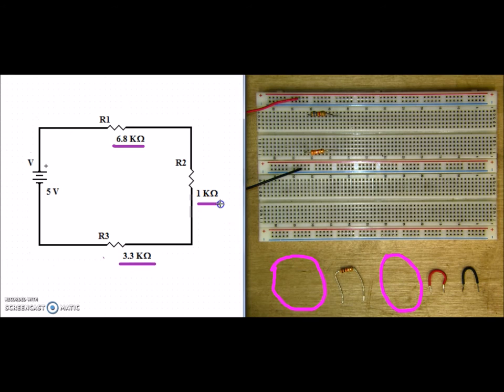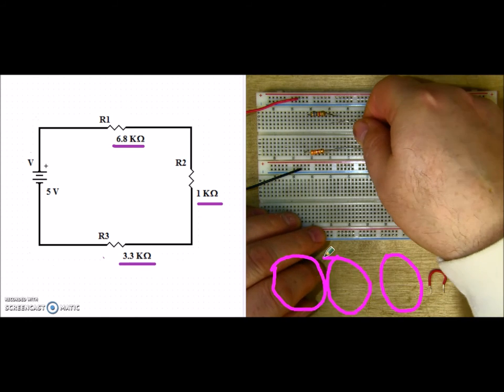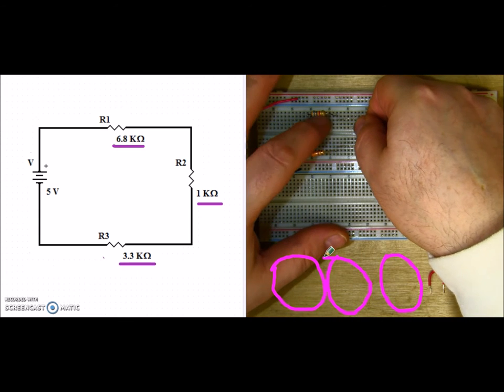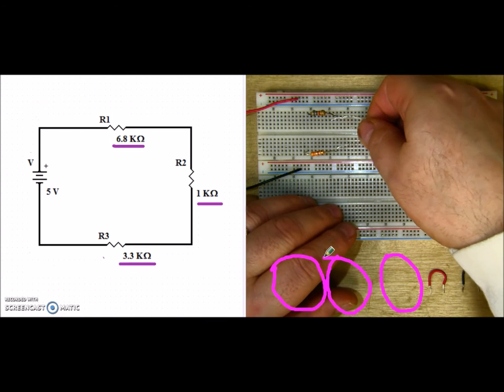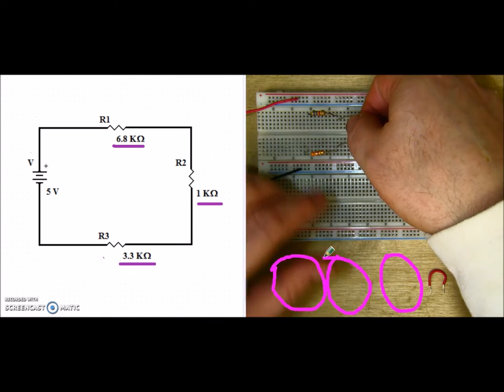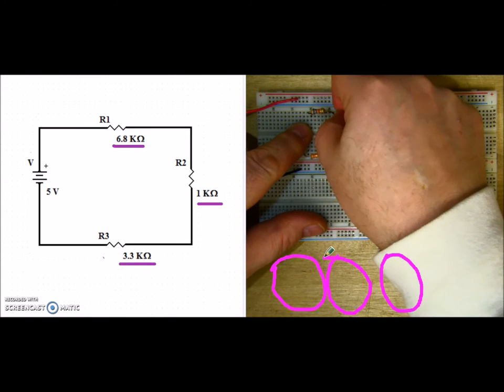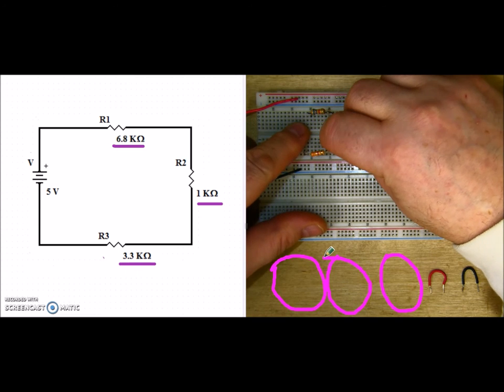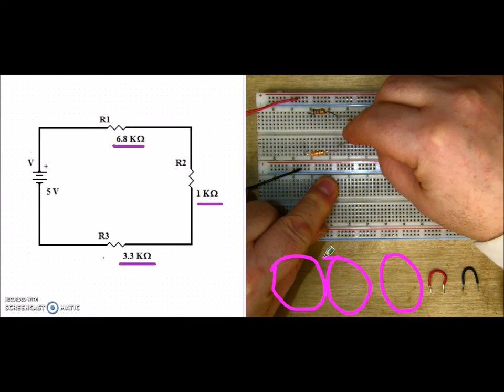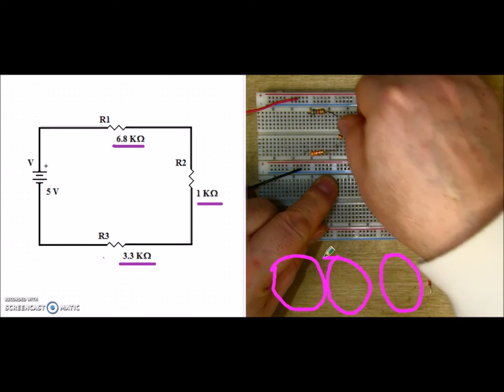And then finally, I'm going to do R2, which is my 1k right here. Now, what's important is that each one of my terminals is in the same column as R1 and R3. So the top of R2 is in the same column, has one terminal of R1. And the second terminal of R2 is connected to one of the terminals of R3.